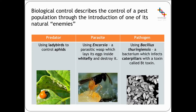One alternative method is biological control, where we control the pest population through introduction of one of its natural enemies. These enemies could be a predator, a parasite, or a pathogen. A good example of a predator would be ladybirds controlling an aphid population. A parasite example is Encarsia, a parasitic wasp that lays its eggs inside a whitefly and destroys it. Finally, we have a pathogen — a bacterium that can infect caterpillars with a toxin called BT toxin and kill off the caterpillars. This is quite specific to caterpillars and shouldn't cause harm to any other organisms.